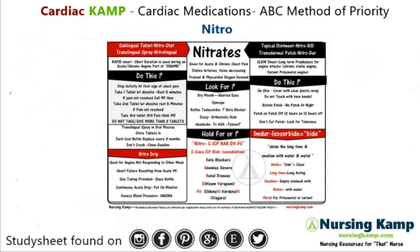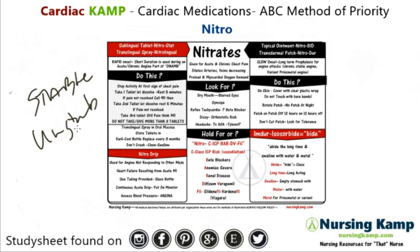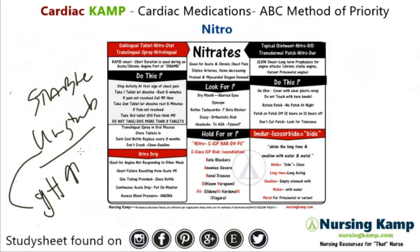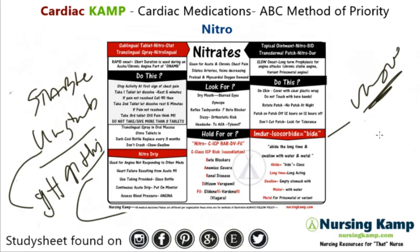Nitro is used for angina — different types including stable angina and unstable angina. It can also be used as a drip, and at higher drip levels it vasodilates the arteries. When used as a drip, it comes in a glass bottle.